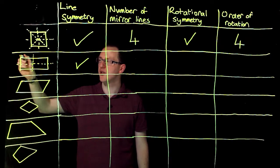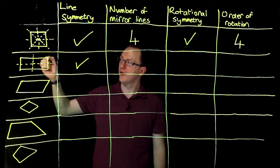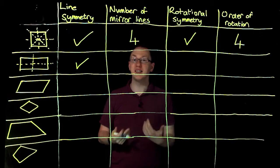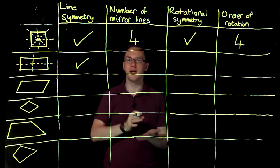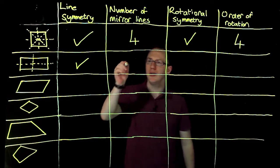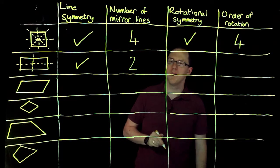There's a common mistake to suggest that there's a mirror line going diagonally through the rectangle. I suggest taking a piece of A4 paper and trying to do that. And you see that's not possible. So there are only two mirror lines.